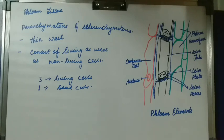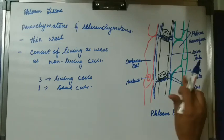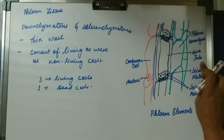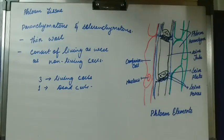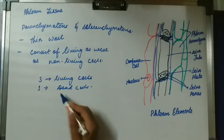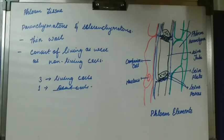Like xylem, phloem also has four elements: sieve tube, companion cell, phloem parenchyma, and phloem sclerenchyma. Phloem sclerenchyma are the dead cells. We will look at each element one by one, starting with the sieve tube.